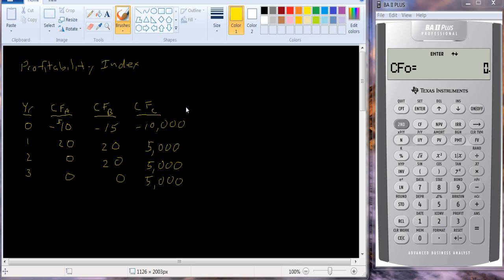Another tool of capital budgeting is the profitability index. The profitability index looks at the ratio of the present value of the future cash flows divided by the cost of the investment.